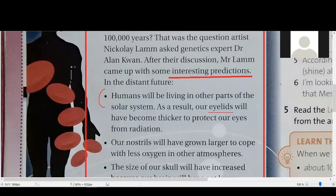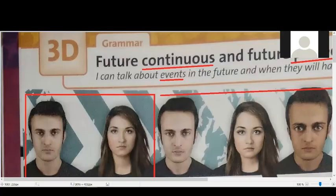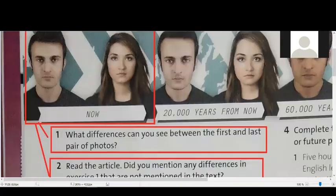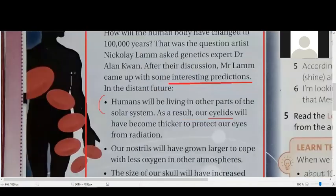Can you translate for me, Rosalie, eyelids? So, our eyelids will have become thicker to protect our eyes. Now, over here, we have the first examples of these future tenses that we have just discussed. Future continuous, budoucí průběhový, and future perfect, předbudoucí čas. Now, both of them are here. One is here, will be living, and the other is right here, will have become.